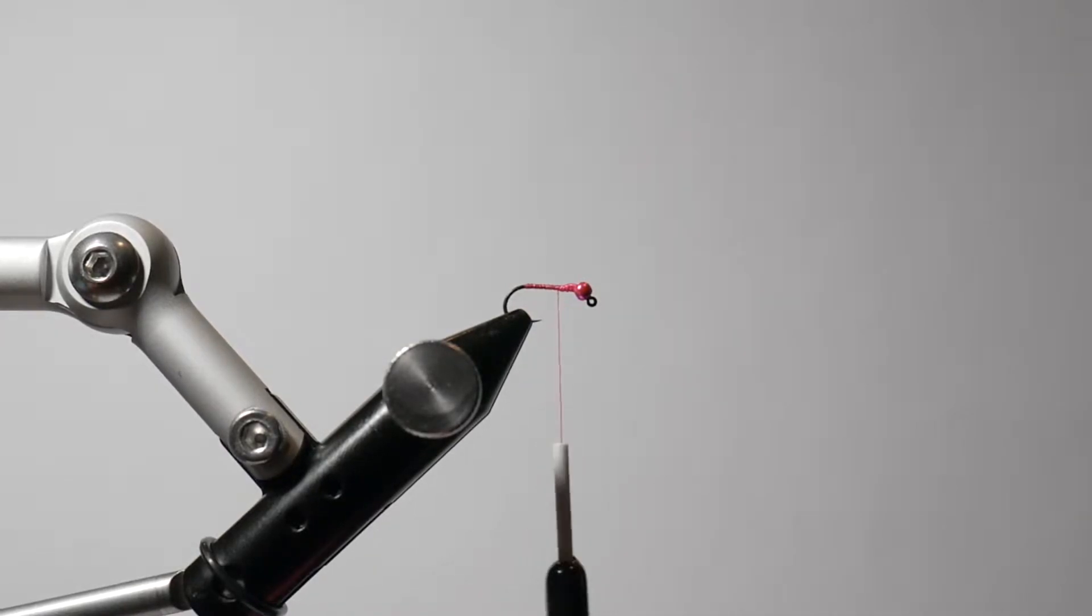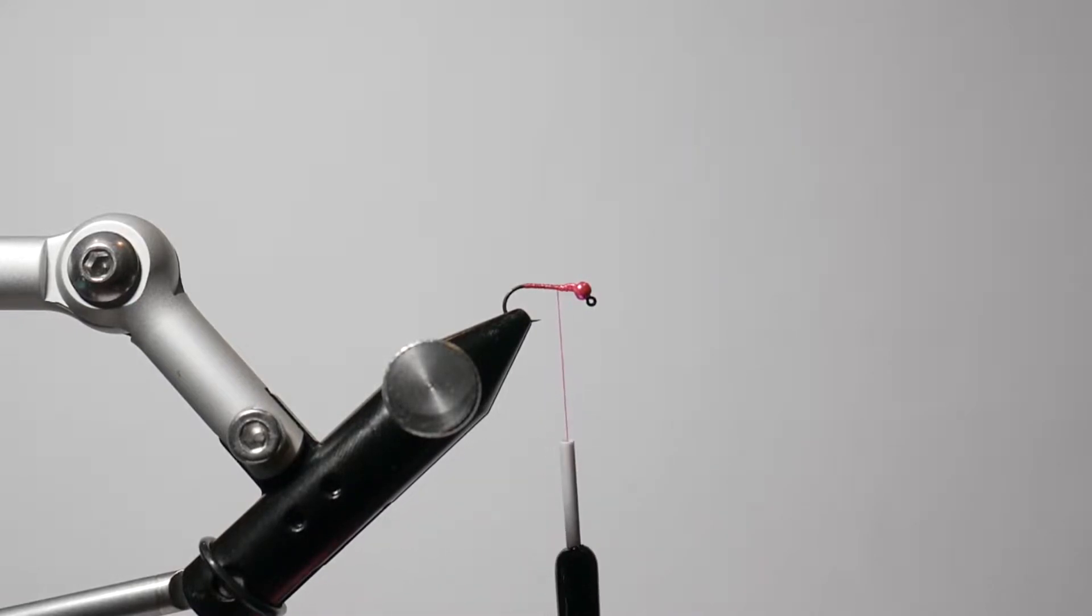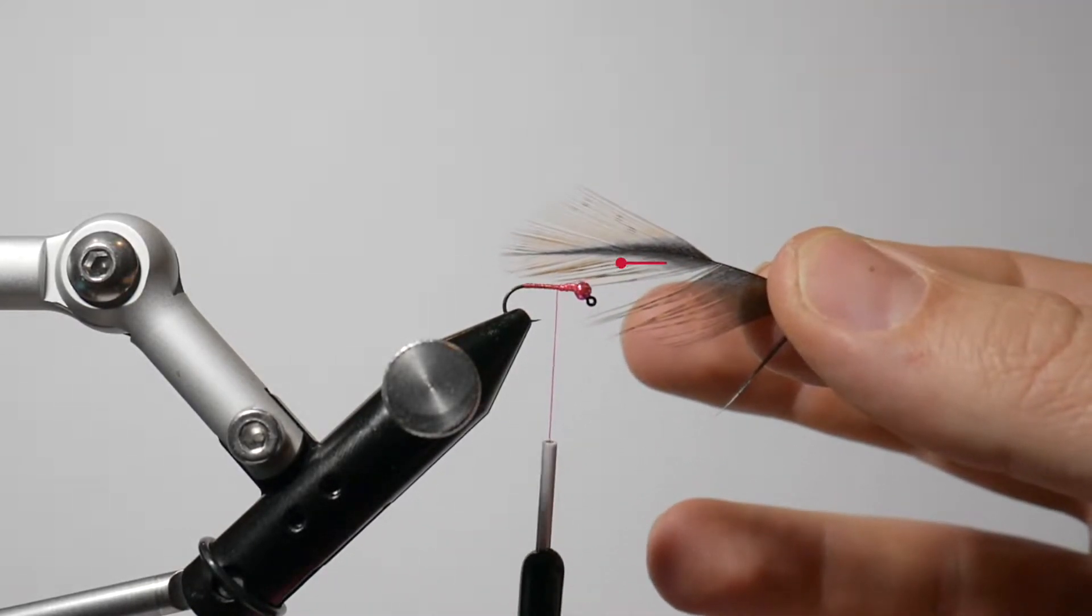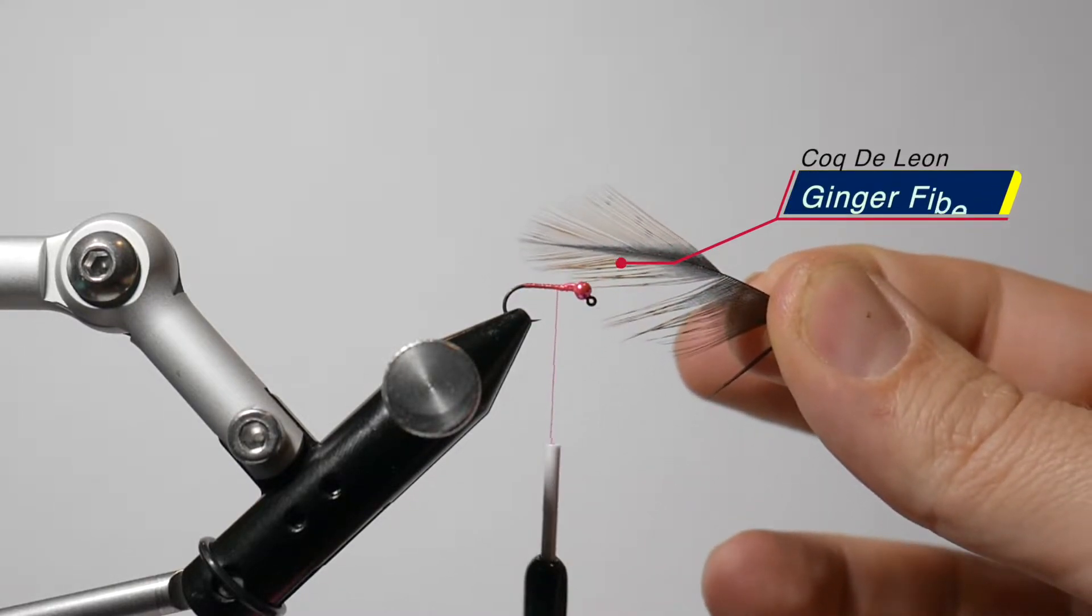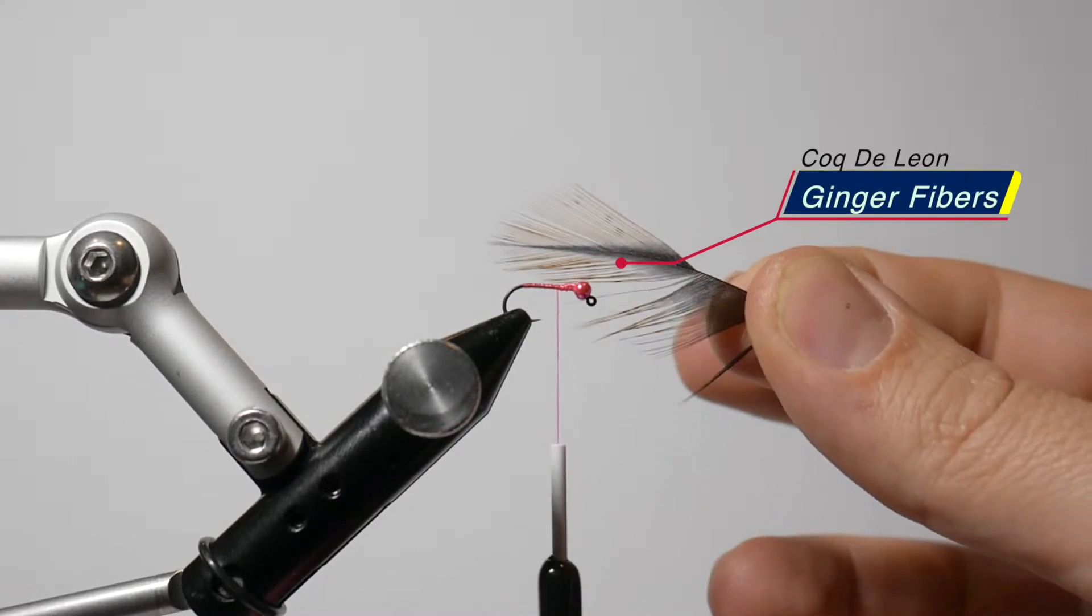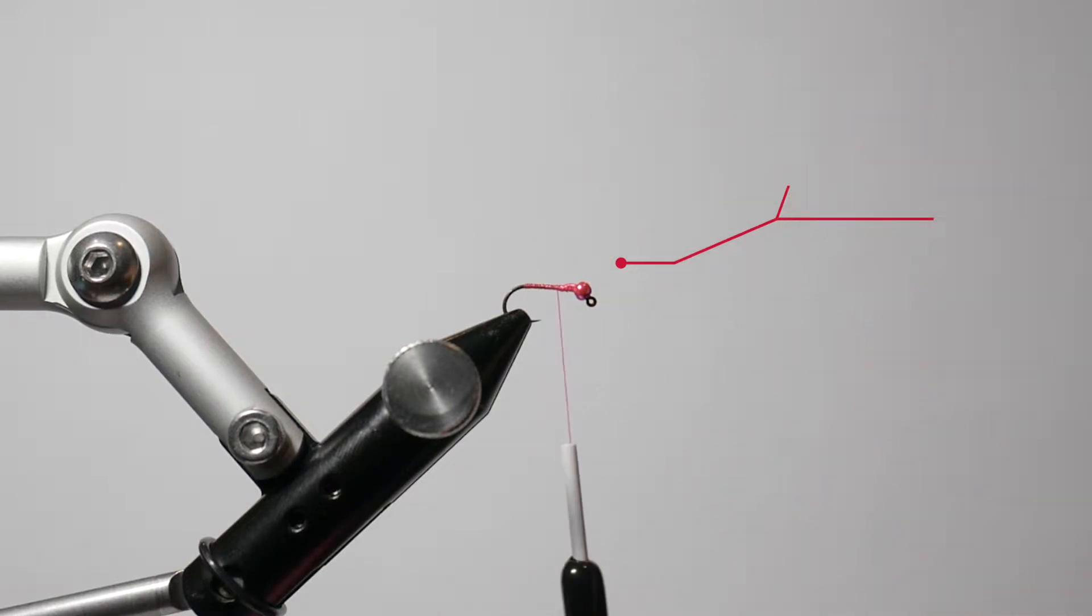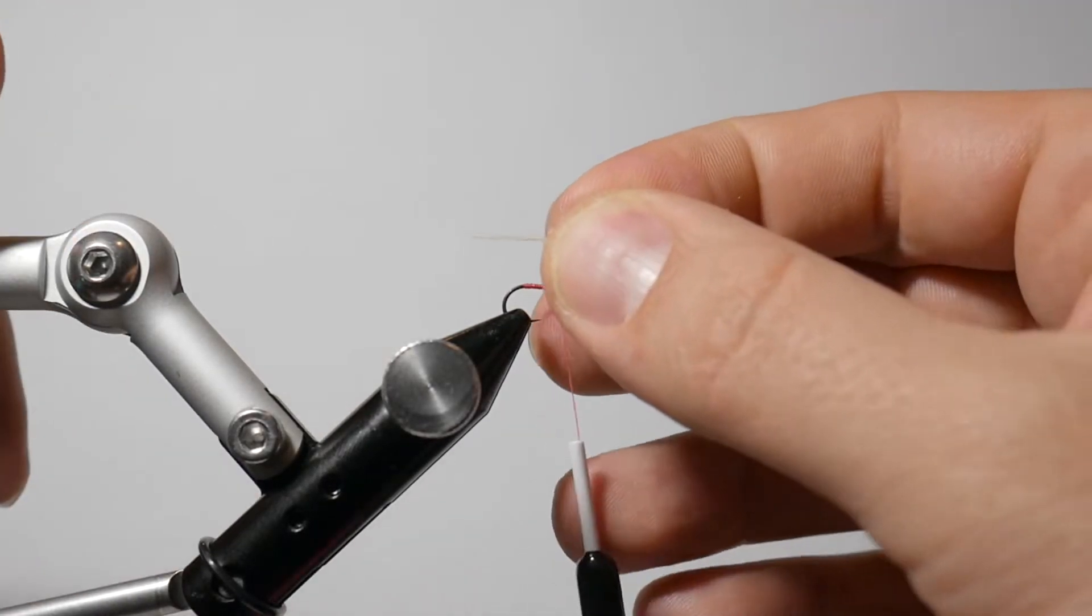The next material that we're going to tie in is a piece of Coq de Leon feathers. Again, I really like the ginger color. I think having the ends with that little bit of ginger coloration on them really helps this fly. So I'm just going to peel away about three strands of that Coq de Leon. I don't want to take too many, just a very thin tail is what we're working on here.